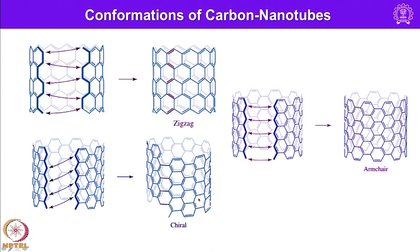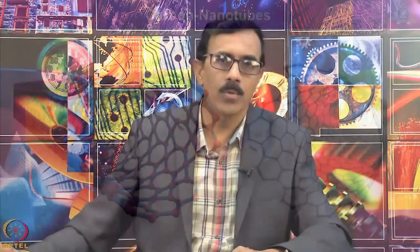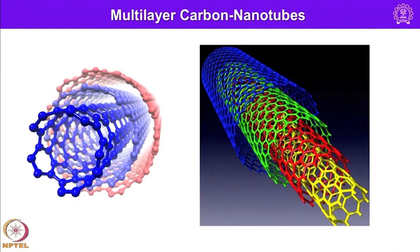This clipping is called zigzag, or one can also make it in a way that gives a chiral centre, or one can make it armchair. So there are several ways in which the clipping of the edges can be performed. This is how a typical carbon nanotube looks like, and if you put a smaller nanotube inside you can have multilayer carbon nanotubes.